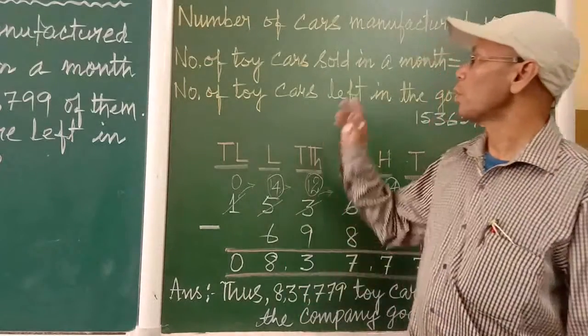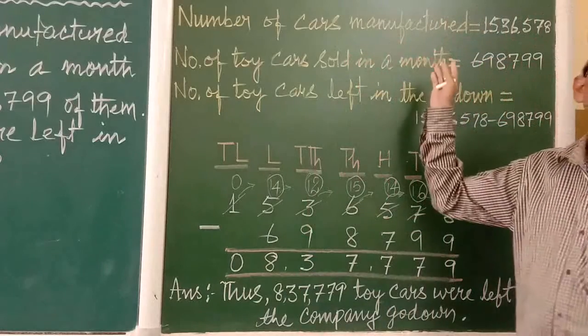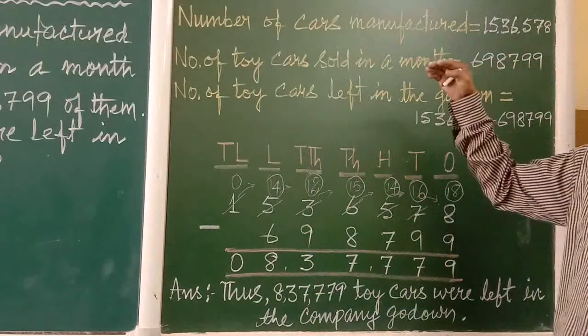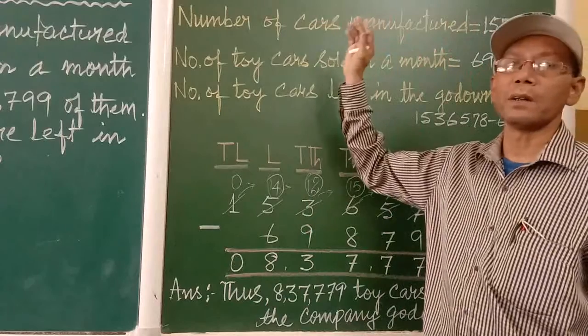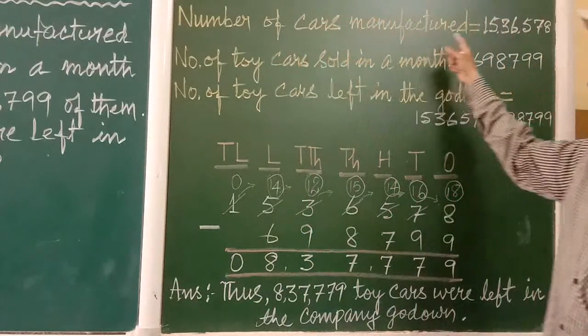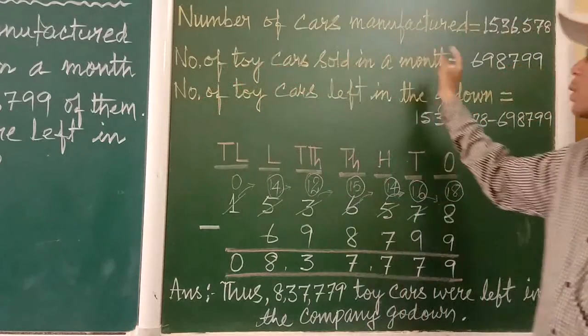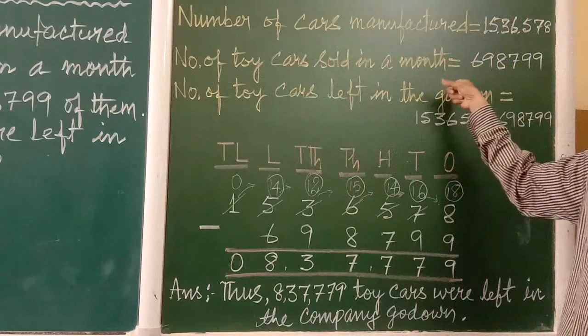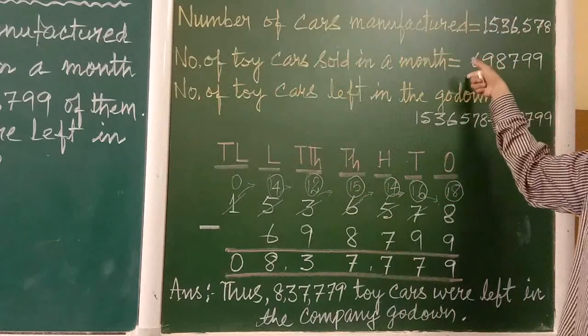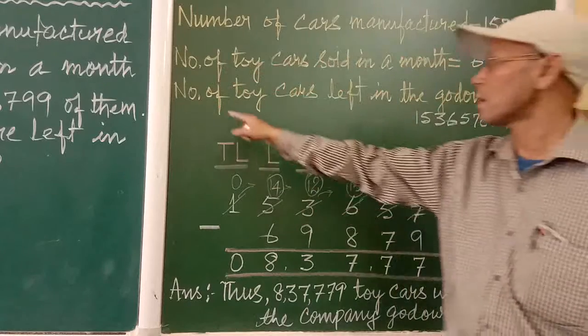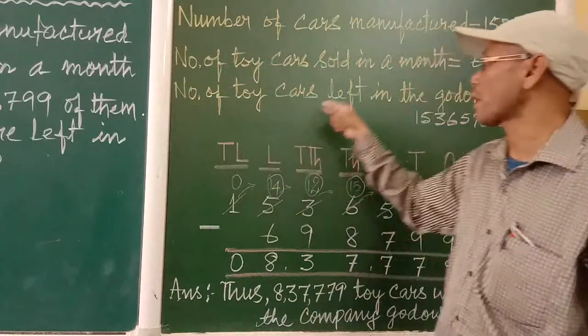Now I am showing you how to solve the problem. So first what you have to do, you have to write the statement. So number of cars manufactured, second number of toy cars sold in a month. So we are selling it, that means we have to subtract. So third step is number of toy cars left in the godown.